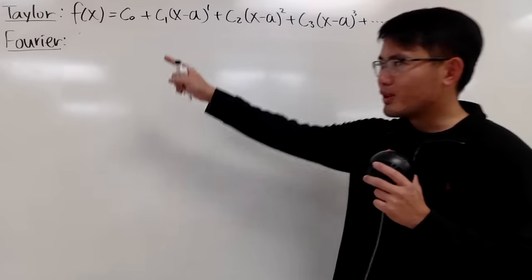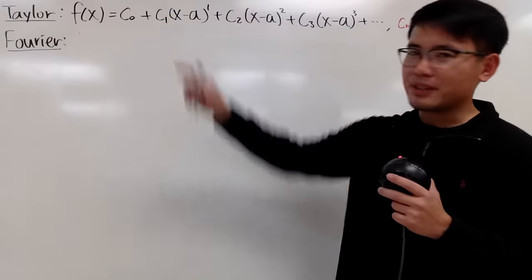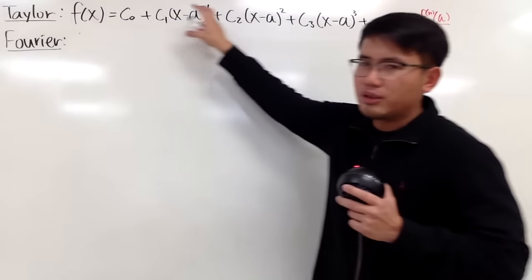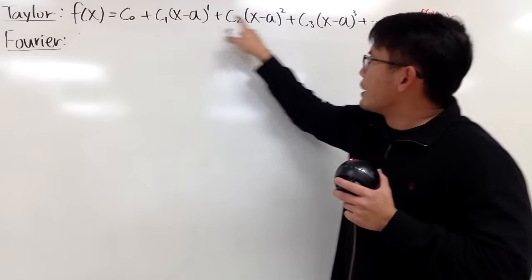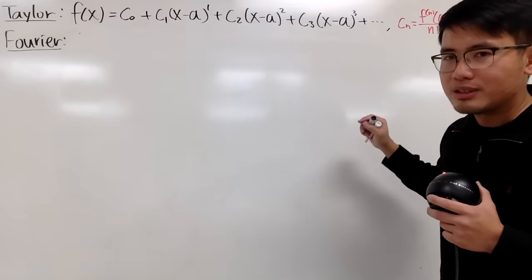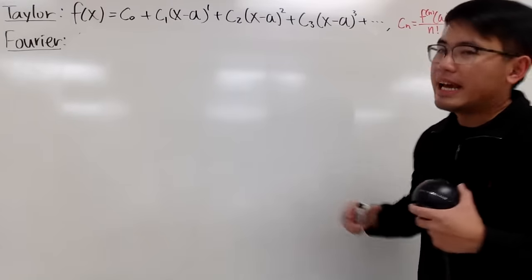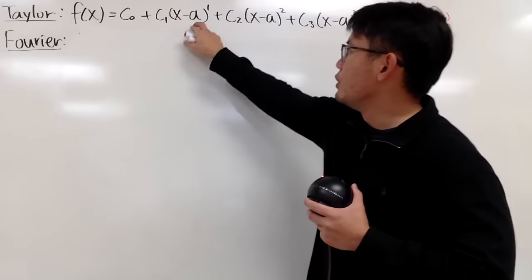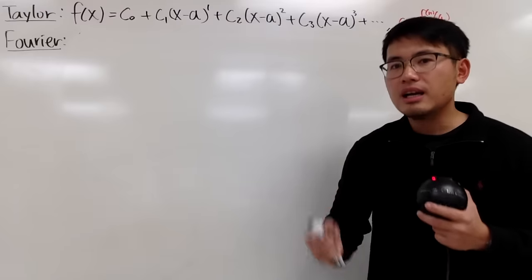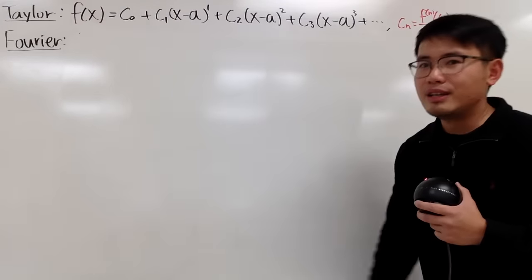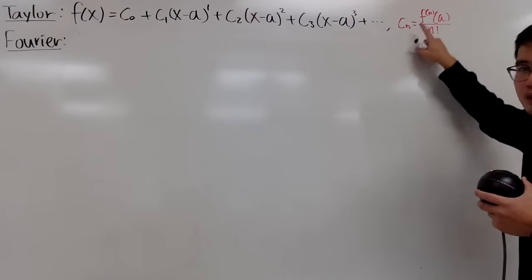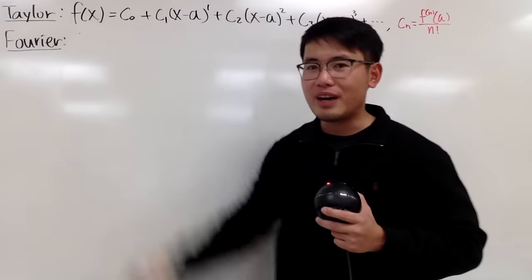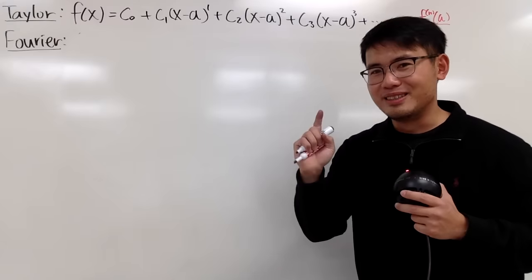Ladies and gentlemen, today we will be talking about the Fourier series. However, how can I leave out Taylor, right? The goal is to write a function as a power series — just like an infinite polynomial. We have the (x - a) to positive whole numbers as building blocks, with coefficients cn. To figure out the cn's, thanks to Taylor, we have a formula, and when we use it we call the result the Taylor series.